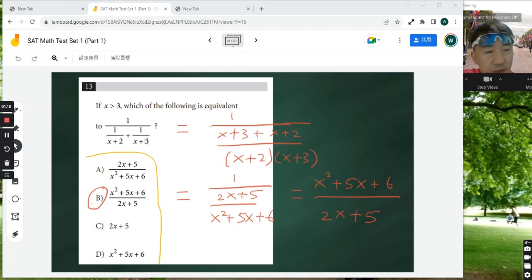This expression looks slightly complicated. You have 1 over the sum of 2 fractions. So let's simplify what's in the denominator first.